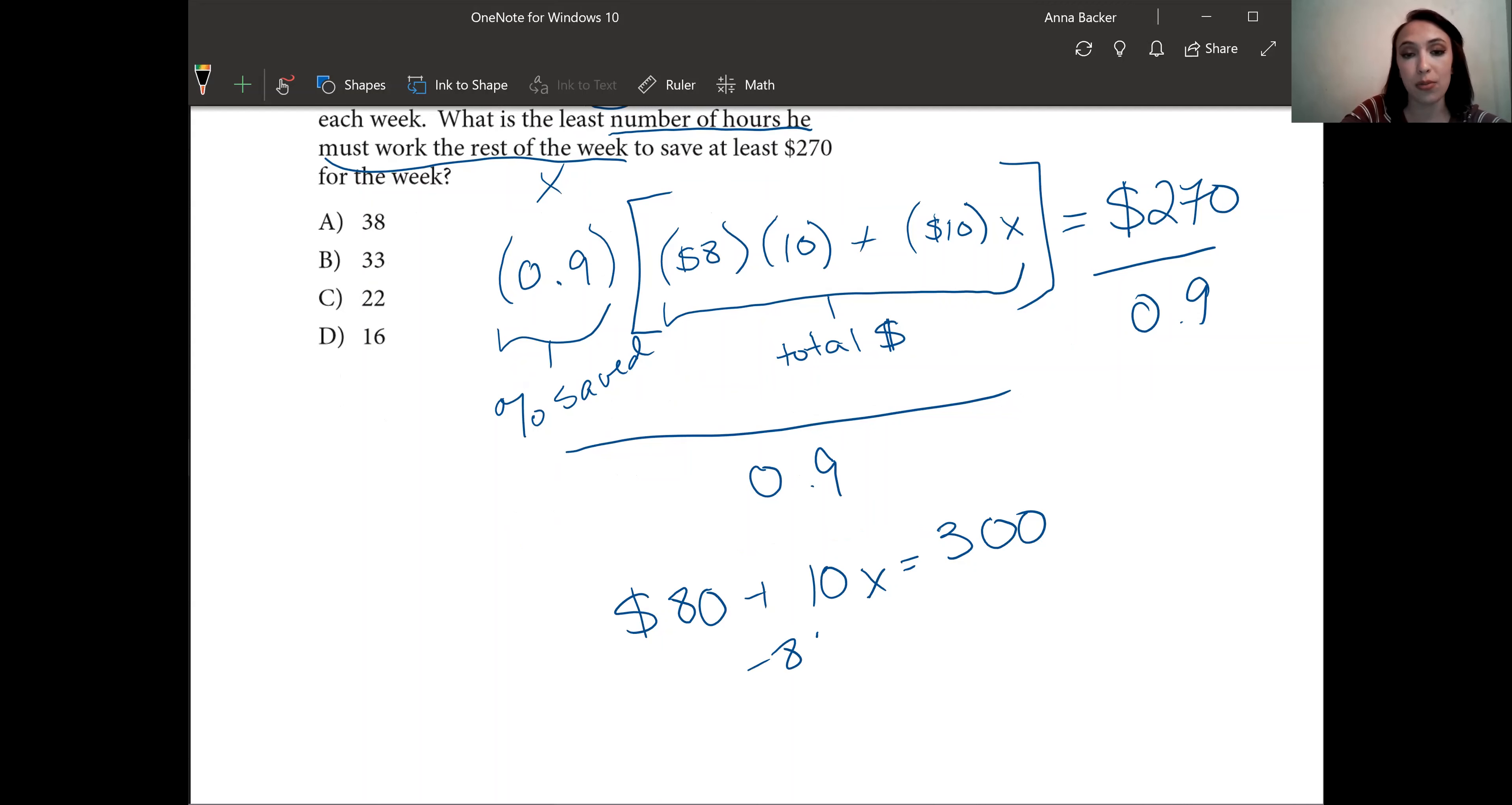We're going to subtract 80 from both sides, isolate our variable of 10x, which is going to give us 220. Dividing both sides by 10, x equals 22 hours.